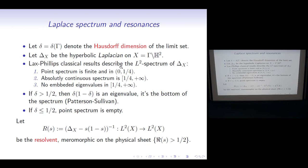The Hausdorff dimension of the trapped set, or the non-wandering set inside the unit tangent bundle, is two times the dimension of the limit set plus one. So the bigger the limit set, the bigger is the trapped set. The dynamical picture is fairly simple — you can prove exponential mixing of the geodesic flow for the measure of maximum entropy on the non-wandering set. Now we are going to look at the spectral picture from the point of view of the Laplacian, and see what is the correspondence between the dynamical picture and the quantum picture.